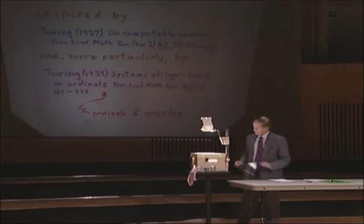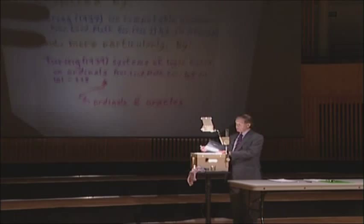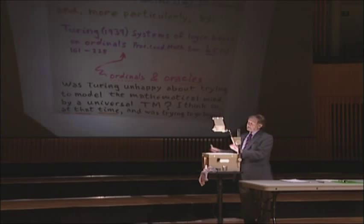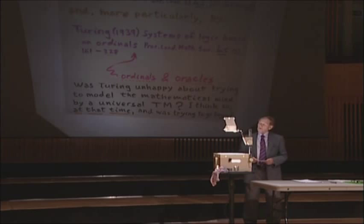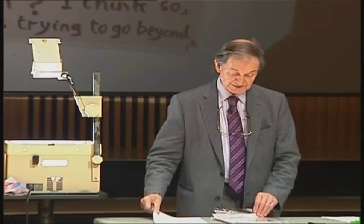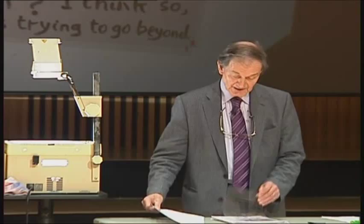After working at Bletchley Park and becoming very familiar with computers, I think he changed his mind and came around to the idea that computers were so universal that perhaps there was some way around the problems he had been pointing out. The question is whether Turing was unhappy modeling the mathematical mind as a universal Turing machine, or whether there was something beyond that. In this second paper, he was trying to explore ideas which go beyond the idea of a normal computer.